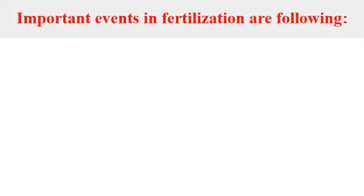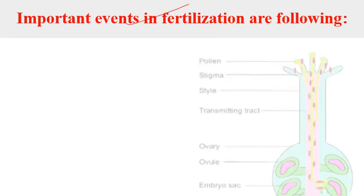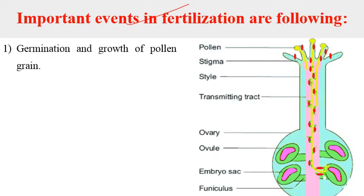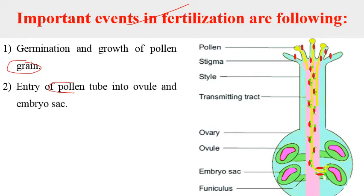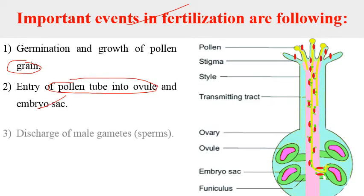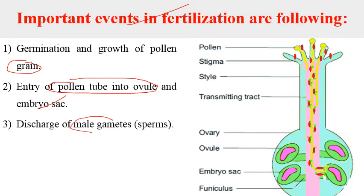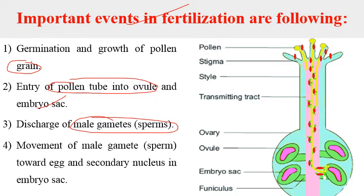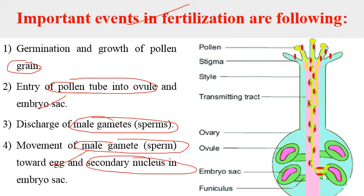The important events in fertilization are as follows: first, germination and growth of pollen grain; second, entry of pollen tube into the ovule and embryo sac; third, discharge of male gametes inside the embryo sac; and fourth, movement of male gametes towards the egg and secondary nucleus in the embryo sac.